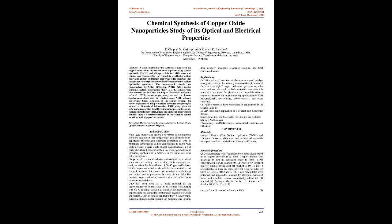Applications: CuO first attracted attention as a good catalyst in organic reactions, but recently discovered applications such as high-DC superconductors, gas sensors, solar cells, emitters, and electronic cathode materials also make this material a hot topic for physicists and materials science engineers. Some of the most interesting applications of CuO nanomaterials are sensing, photocatalyst, and supercapacitor. CuO nanomaterials have wide range of applications in electrical and electronics devices, supercapacitors and electrodes for lithium-ion batteries, sensing applications, photocatalyst, and solar energy conversion field emission effects.